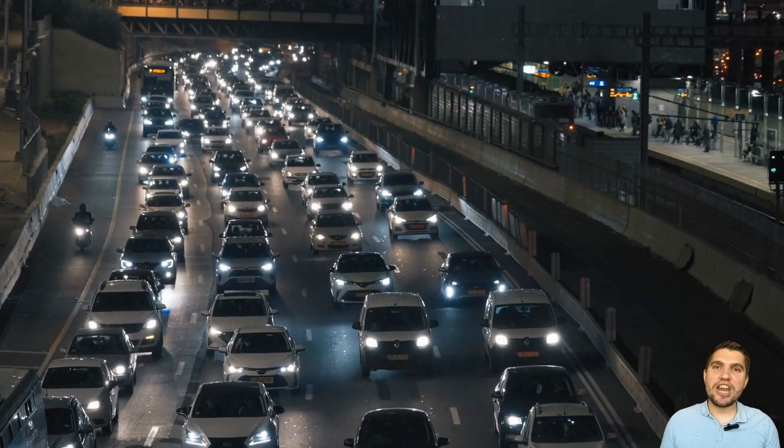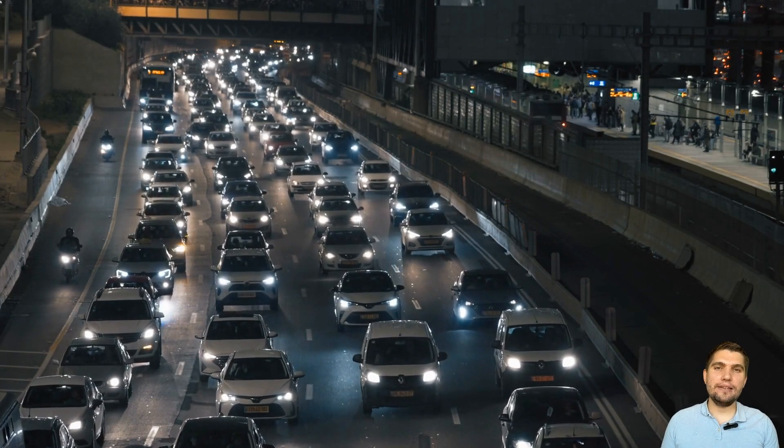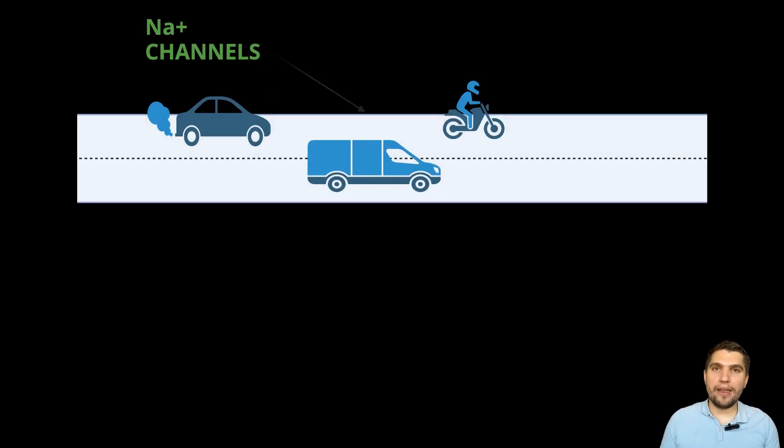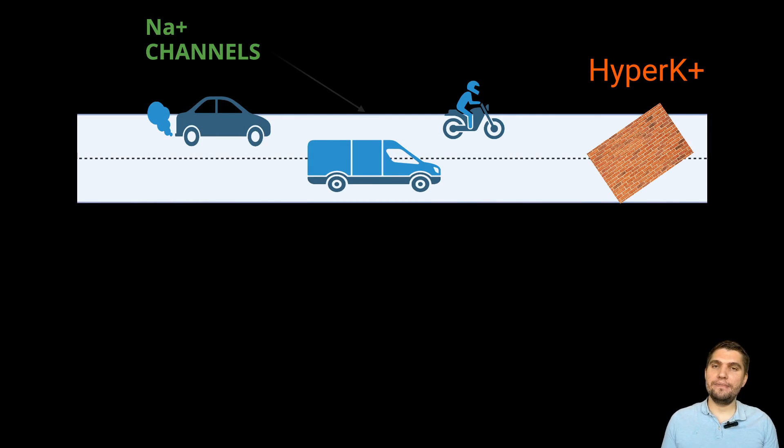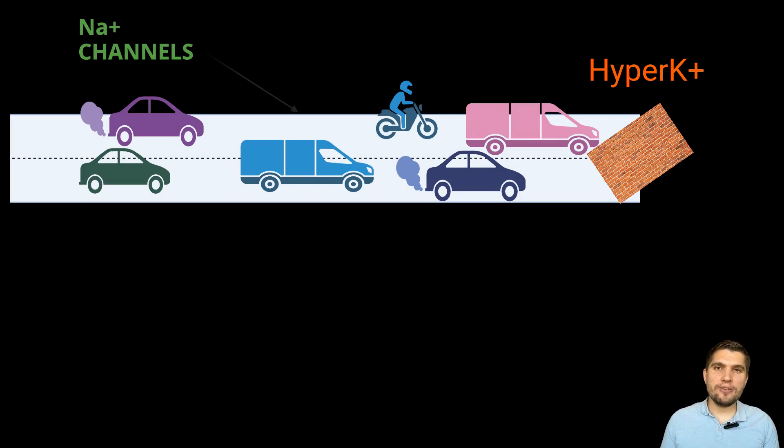Let's use a traffic jam analogy to make this complex topic easier to understand. Imagine you're on a highway where cars, representing electrical signals in the heart, are trying to move forward. Normally, fast-moving lanes, i.e. sodium channels, let traffic zip through at high speed, keeping everything running smoothly. But suddenly, a major accident, i.e. severe hyperkalemia, happens up ahead. The normal lanes get completely blocked, and no cars can move forward. Traffic slows to a crawl, creating a massive jam, just like how conduction in the heart slows when sodium channels become inactivated due to hyperkalemia.